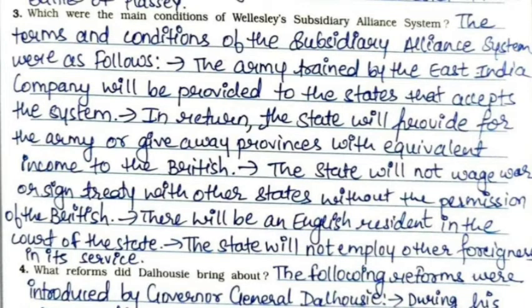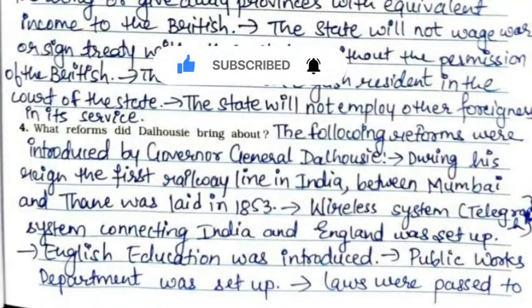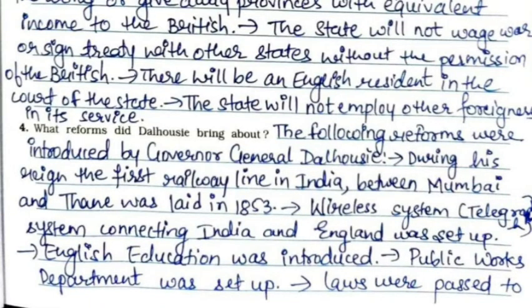Third: What were the main conditions of Wellesley's Subsidiary Alliance System? The terms and conditions were as follows: The army trained by the East India Company would be provided to states that accepted the system. In return, the state would provide for the army or give away provinces with equivalent income to the British. The state would not wage war or sign a treaty with other states without British permission. There would be an English resident in the court of the state. The state would not employ other foreigners in its service.